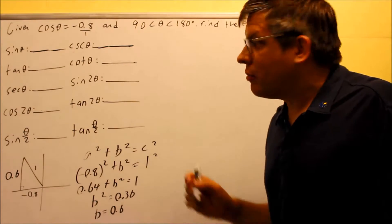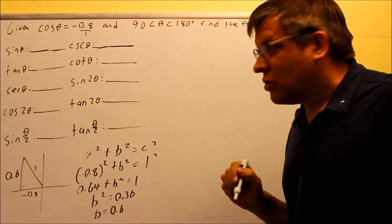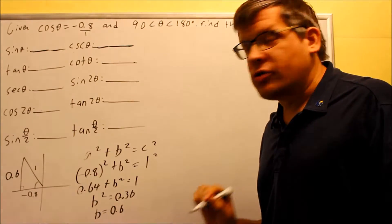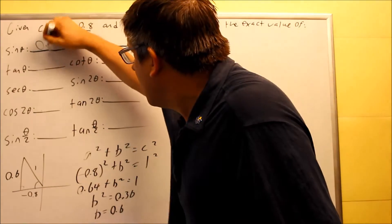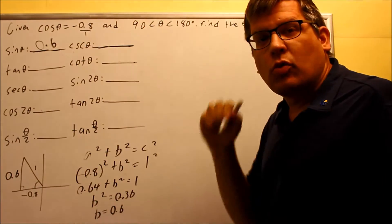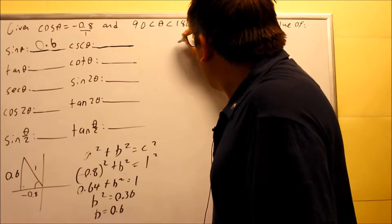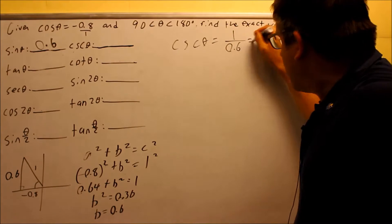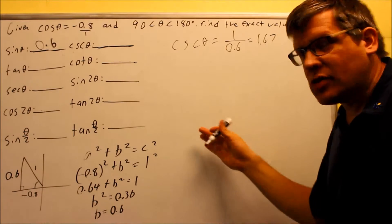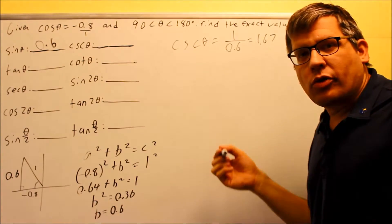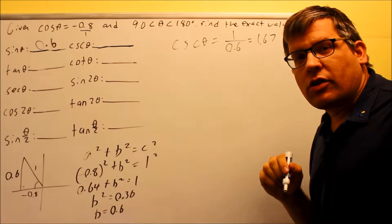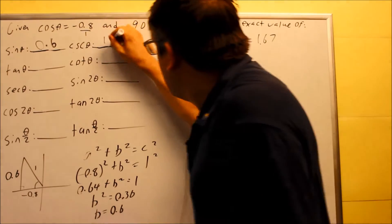Now we have all three sides of the triangle and we're ready to find the trig values. Sine theta equals opposite over hypotenuse, which is 0.6. Cosecant is the reciprocal: 1 over 0.6 equals 1.67. The notes say to round to two decimal places, so we'll keep everything in decimals. Tangent is opposite over adjacent: 0.6 divided by negative 0.8 equals negative 0.75. Cotangent is the reciprocal of tangent: 1 over negative 0.75, or negative 0.8 over 0.6, giving negative 1.33. Secant is 1 over negative 0.8, which equals negative 1.25.